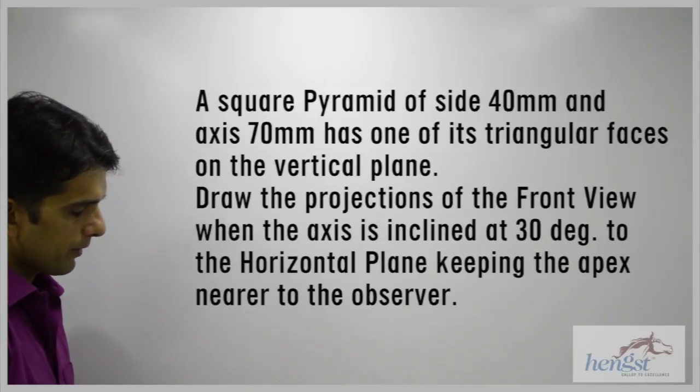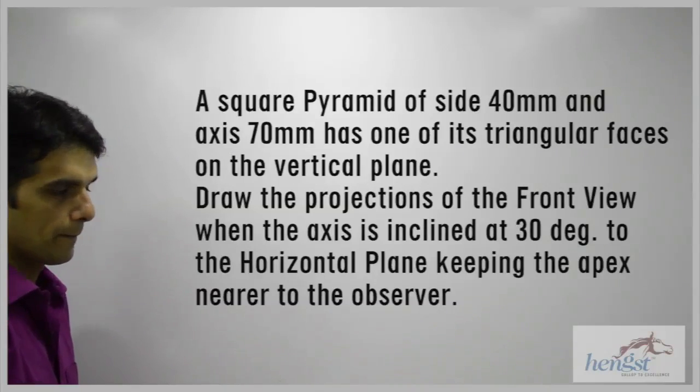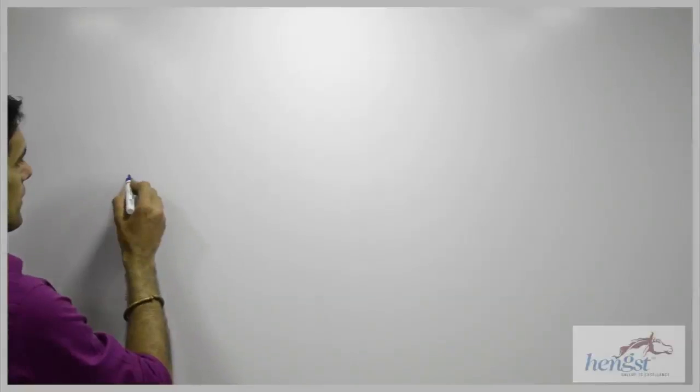A square pyramid of side 40 mm and axis 70 mm has one of its triangular face on the vertical plane. Draw the projection when the front view of an axis is inclined at 30 degree to HP, keeping the apex nearer to the observer. So first we will draw x by y.